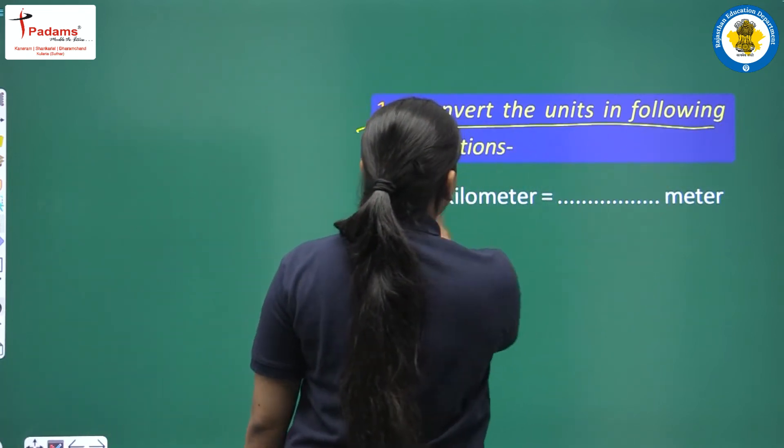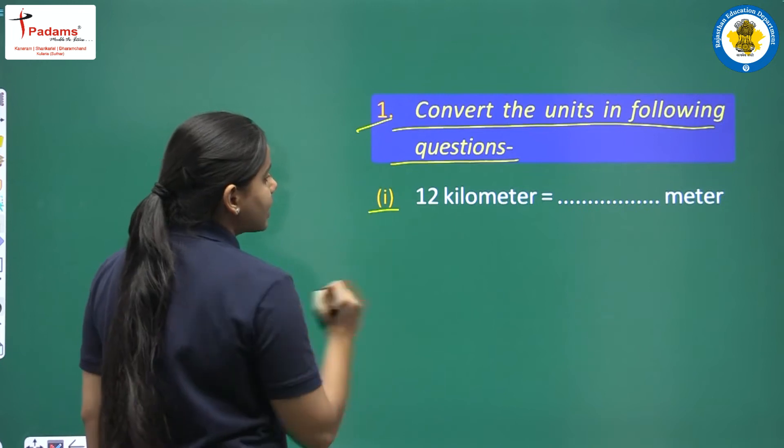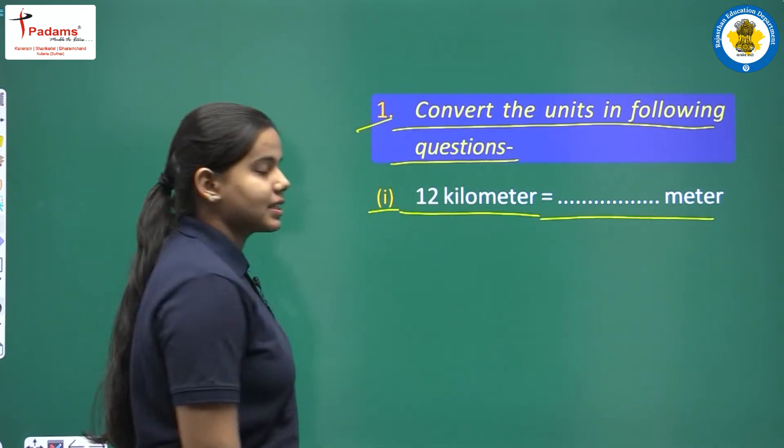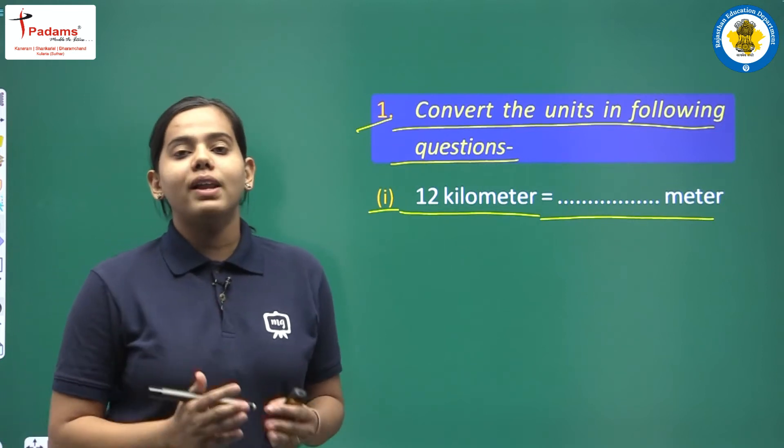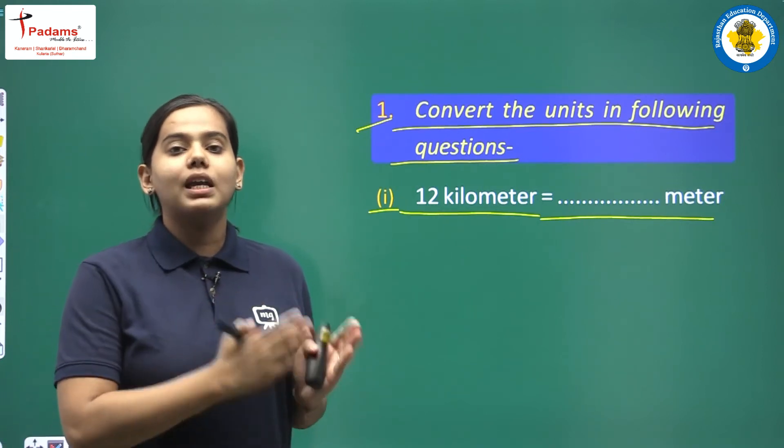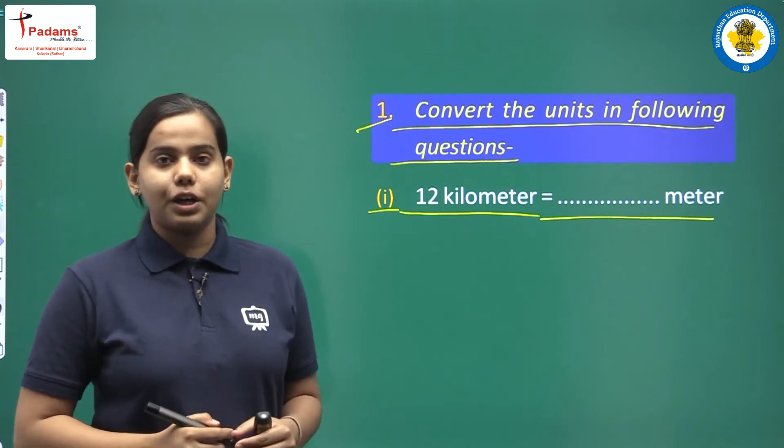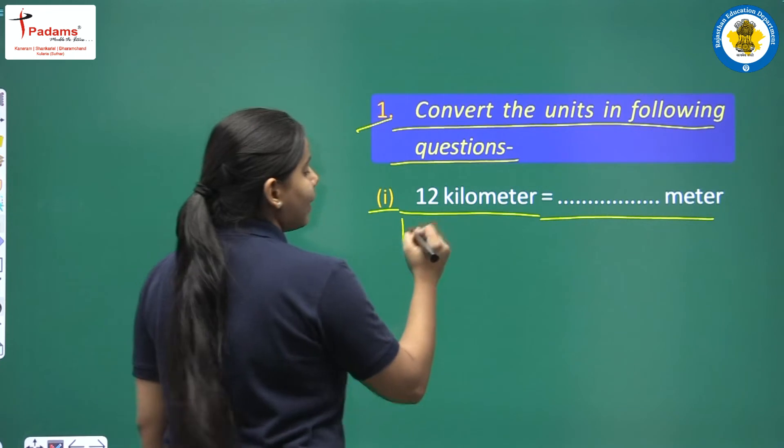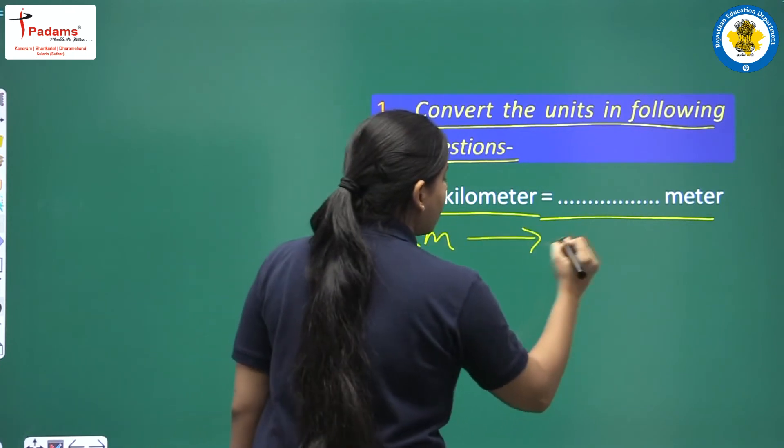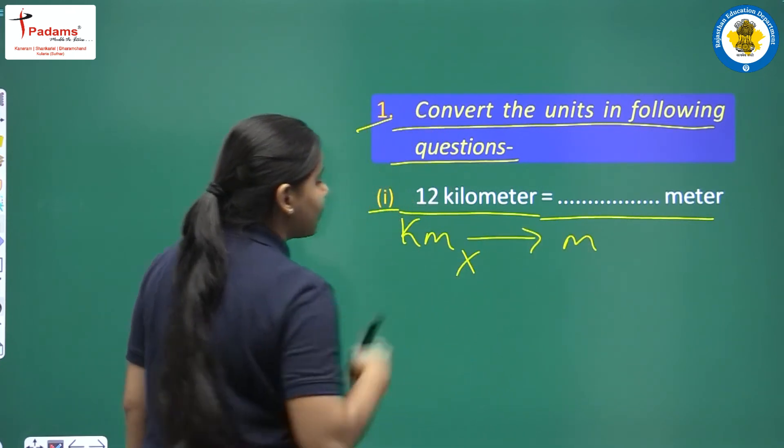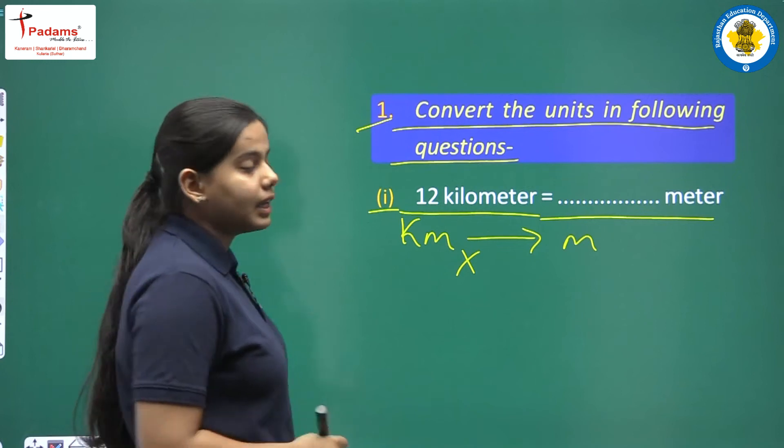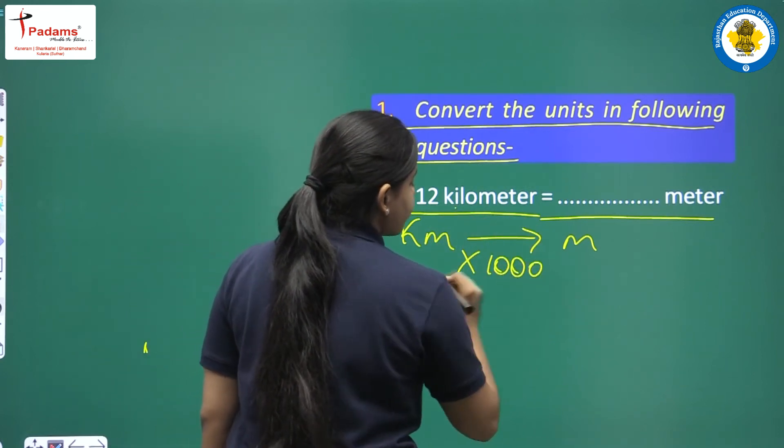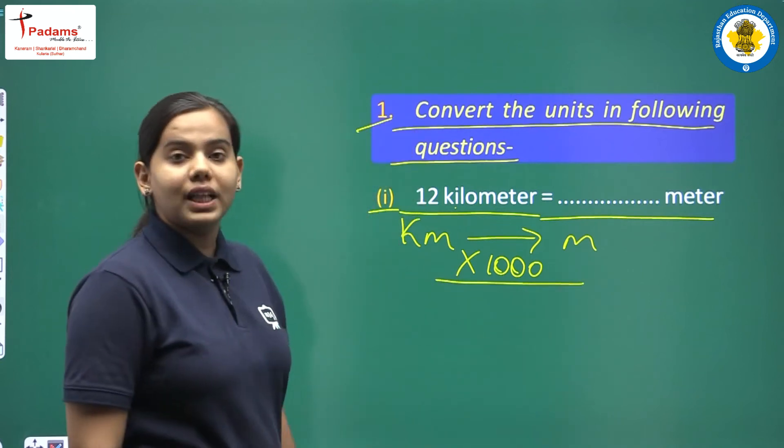Convert the units in following question. First part is 12 kilometers equals dash meter. This means we have to find out 12 kilometers, how many meters are here? We have to change kilometers here. So children, understand this concept here. When we have to go from large units to small units, we apply here multiplication. How do we multiply? Look, 1 kilometer is 1,000 meters.